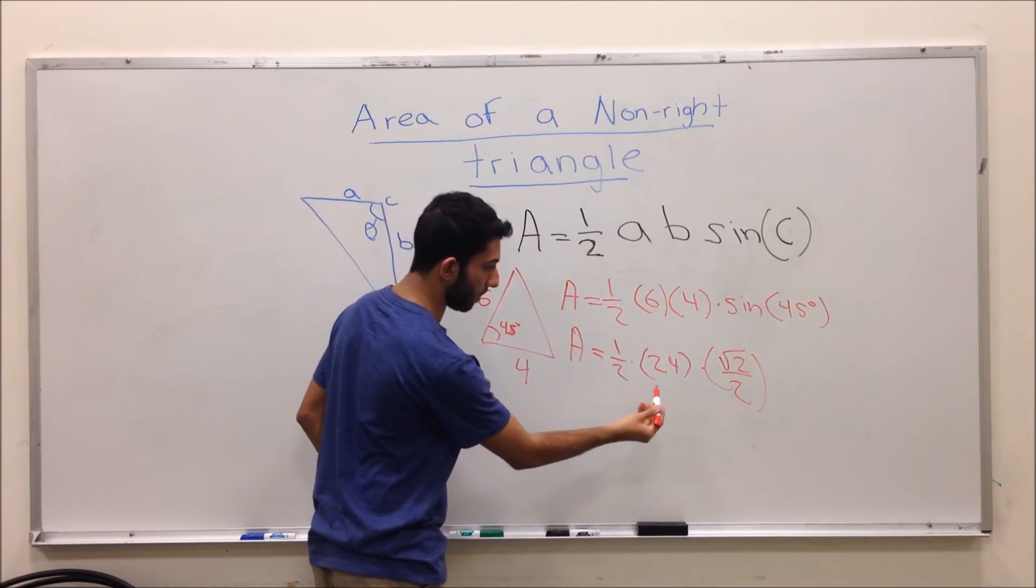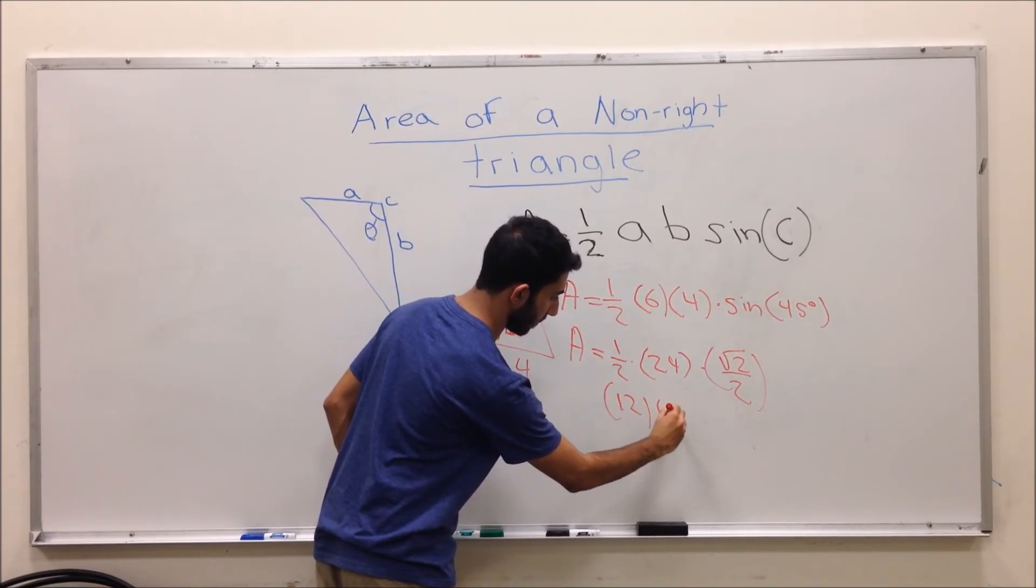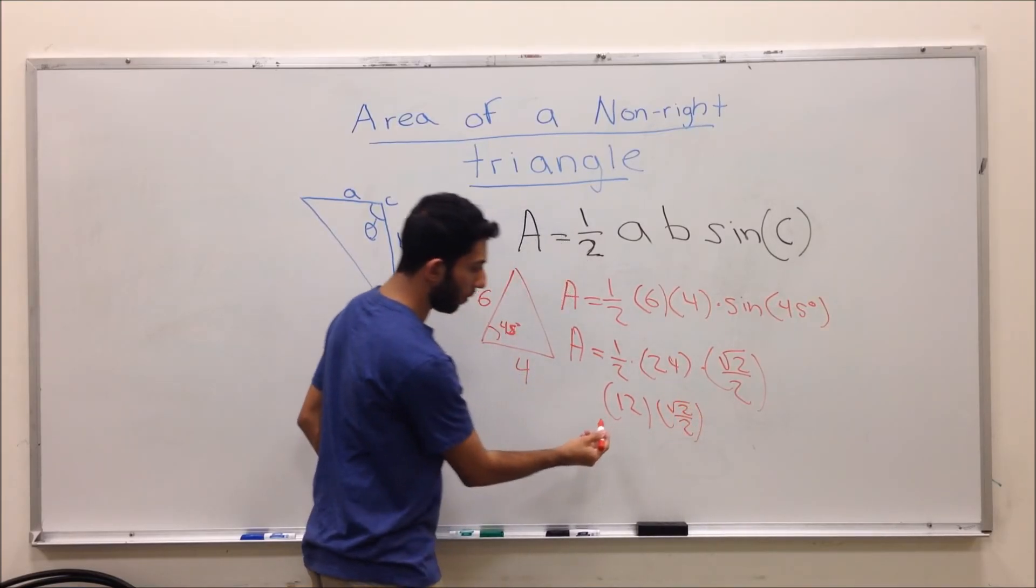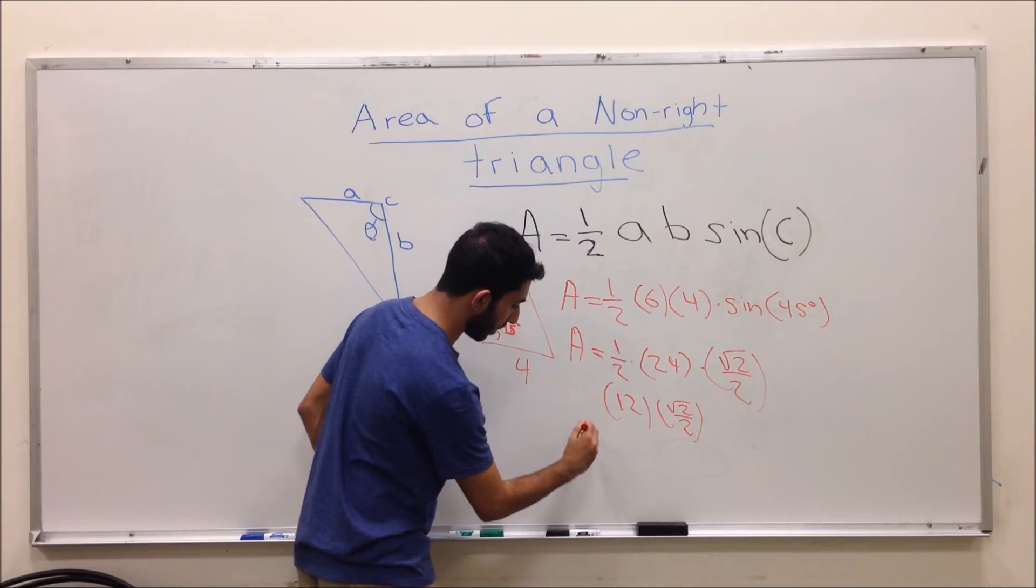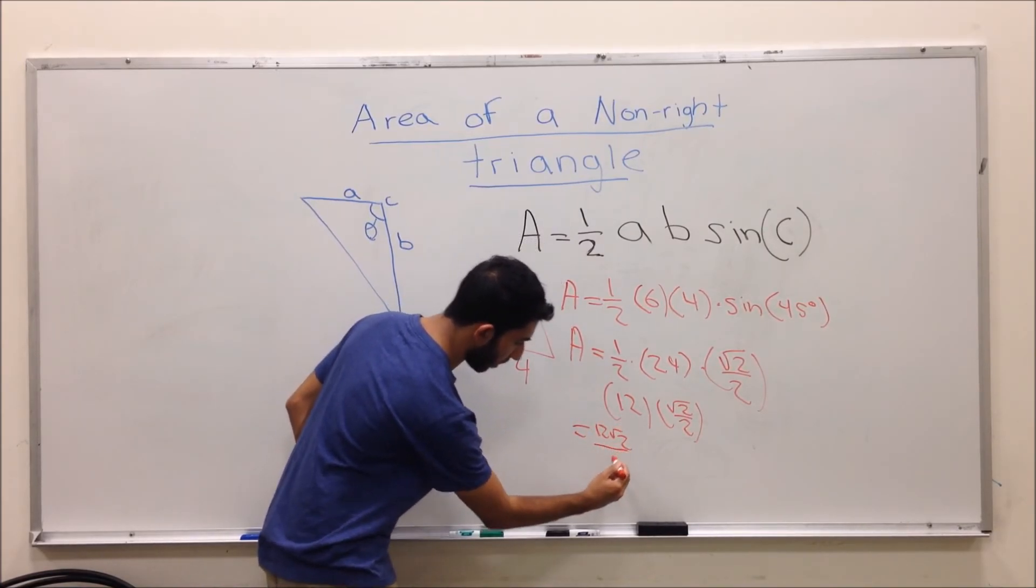Now you will simply multiply them. 24 times one-half is 12. You bring the radical 2 over 2 below. 12 times radical 2 over 2 will get you 12 radical 2 over 2.